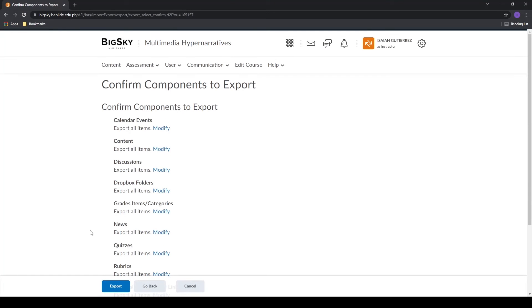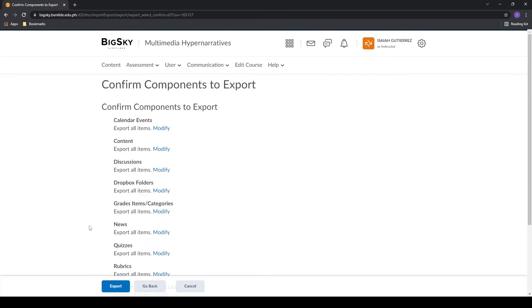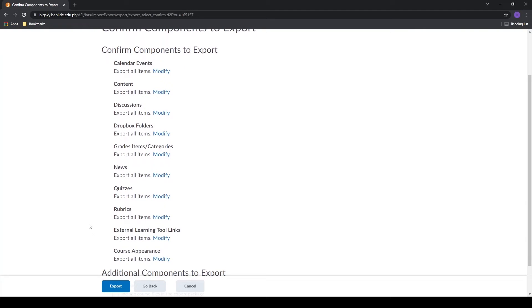Here on this page, you can review the components you selected and modify them if needed. When you scroll down to the very bottom, you will see additional components to export and a checkbox.